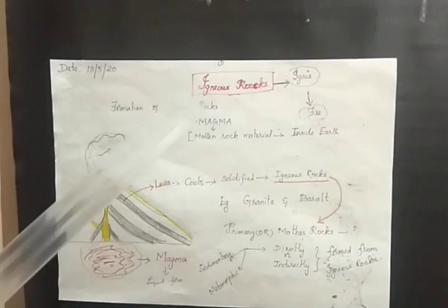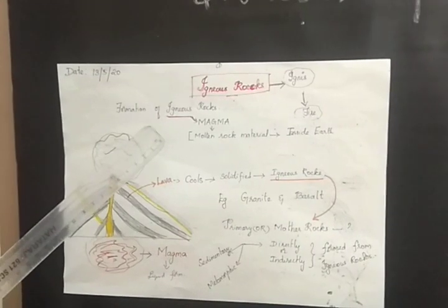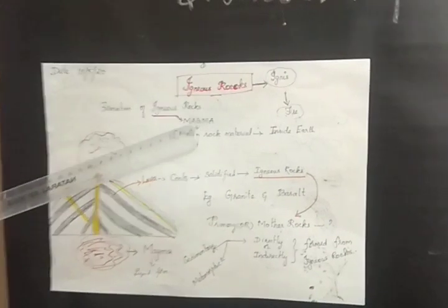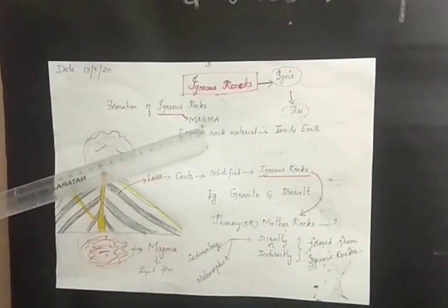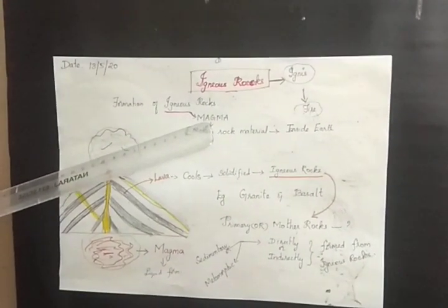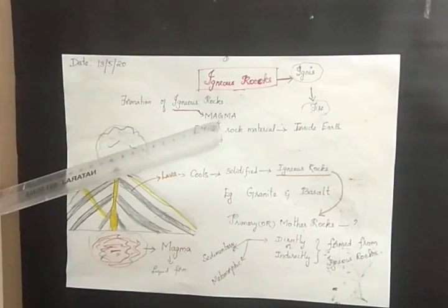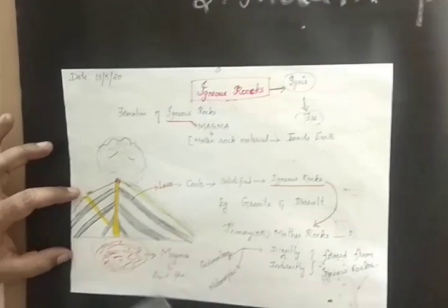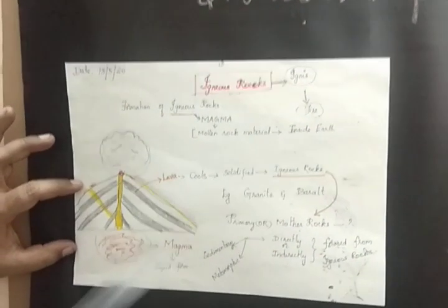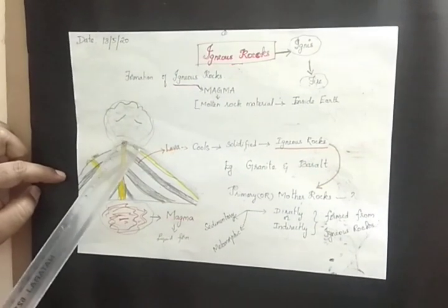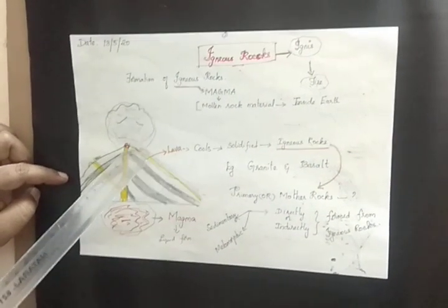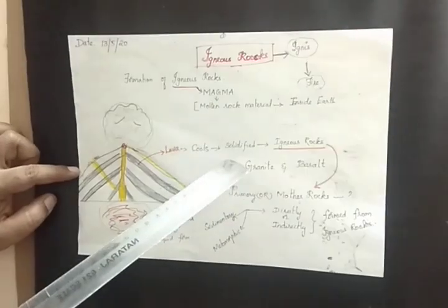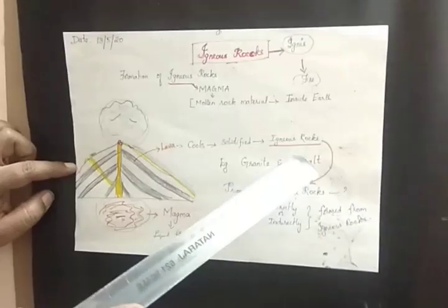How are igneous rocks formed? Igneous rocks are formed from magma. Magma is found in the lower part of the mantle and is always in liquid form. When this liquid magma reaches the top layer of the earth, it is termed as lava. When this lava cools and solidifies into rock, that is called igneous rock.